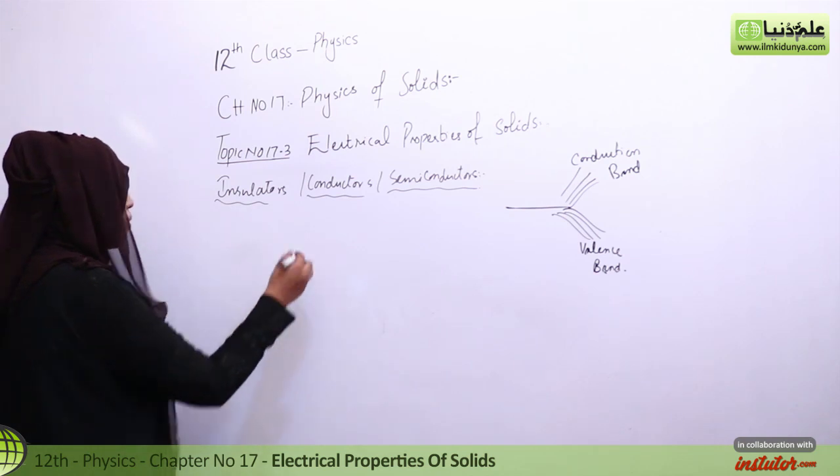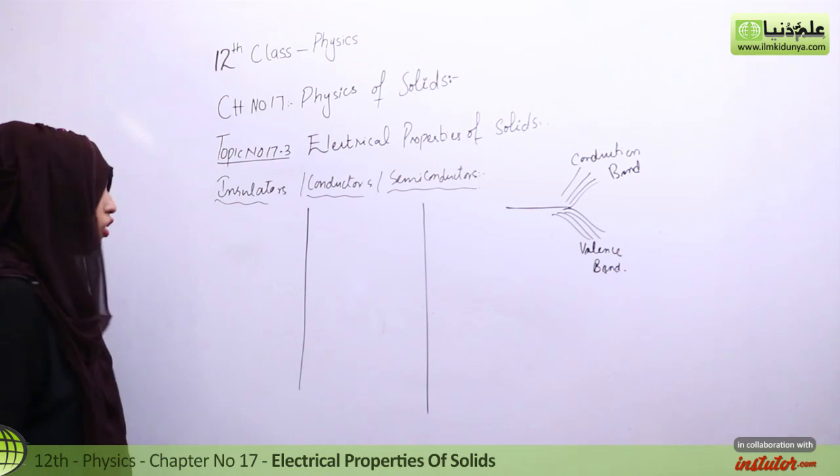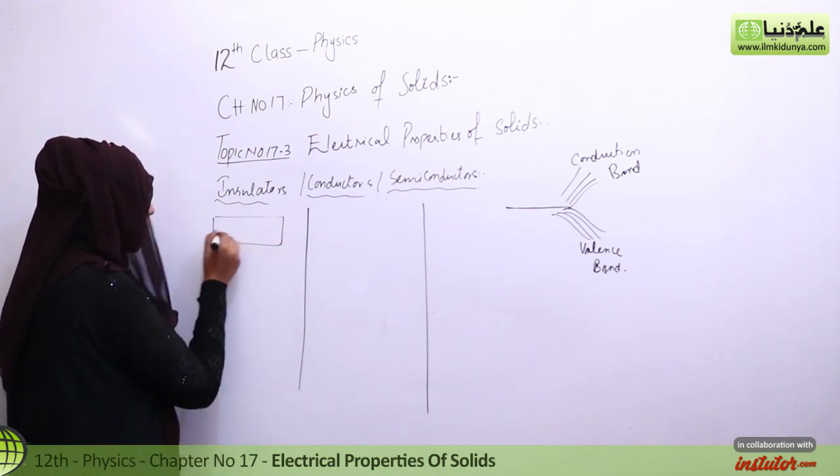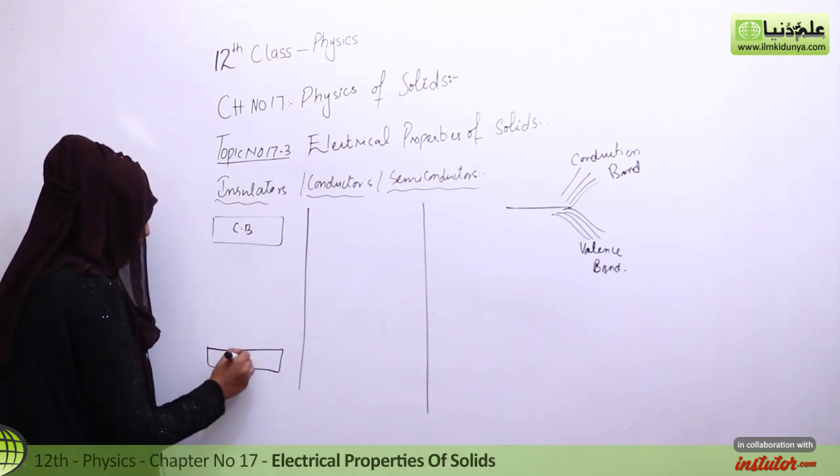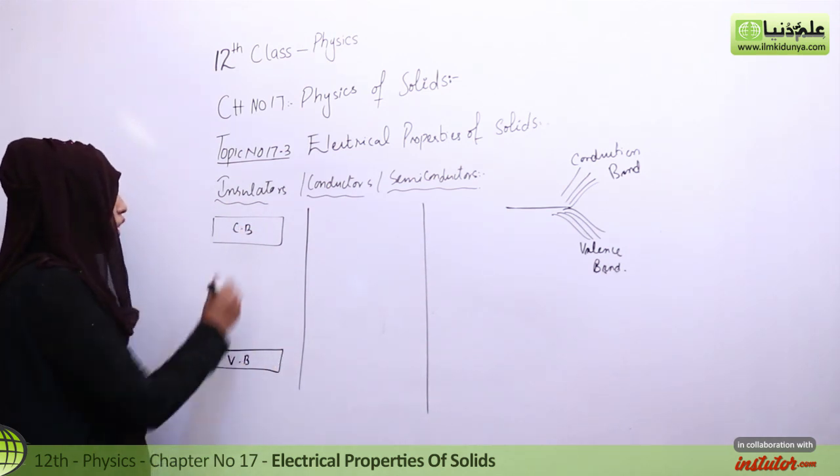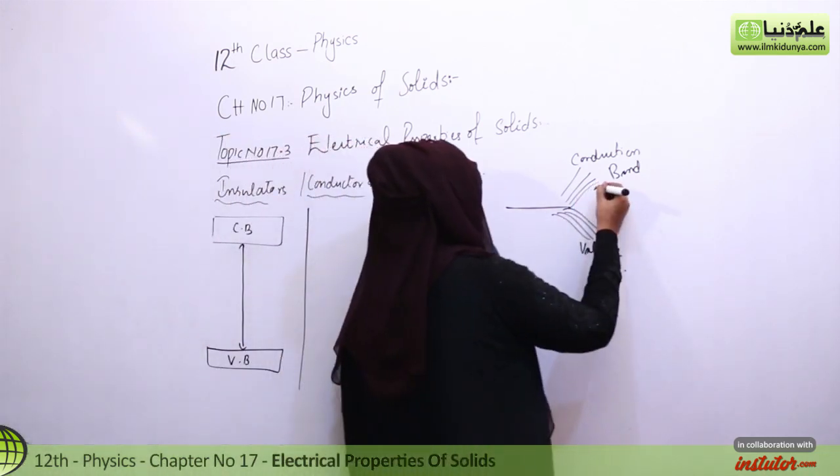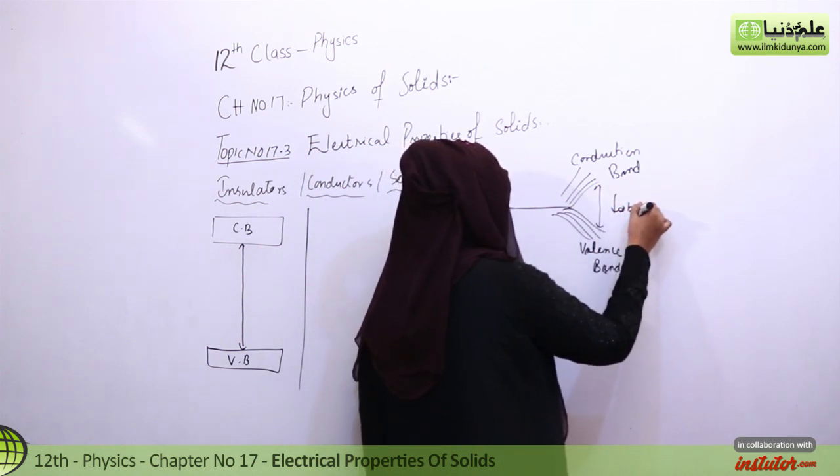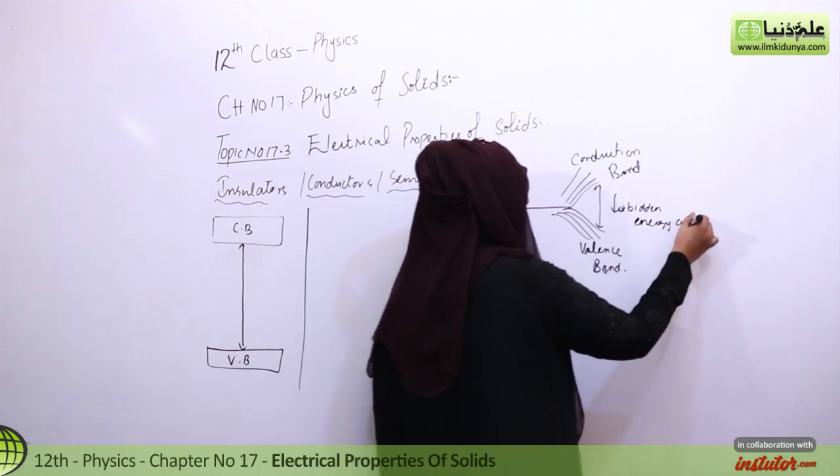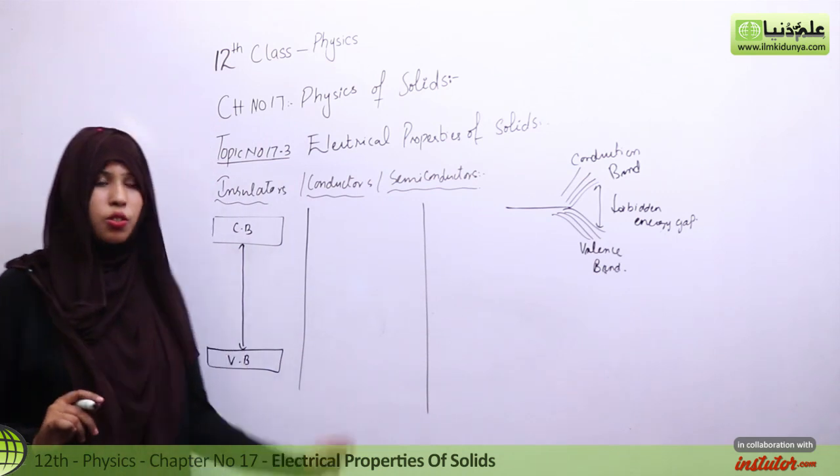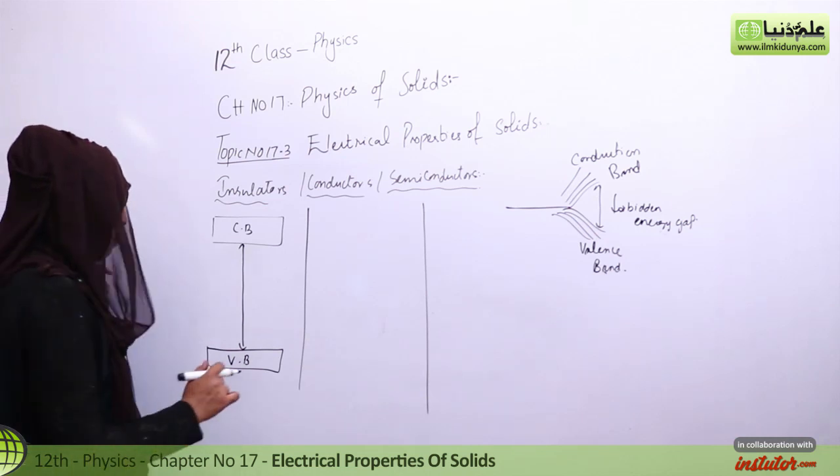Now let's talk about the insulators, conductors and semiconductors. What happens in the insulators? The upper band, which we call Conduction band, is this. And this is our Valence band, which is the lower band, is here. And between the distance, what do we call it? Forbidden energy gap. Now simply, what happens? Insulators, the forbidden energy gap is very large.